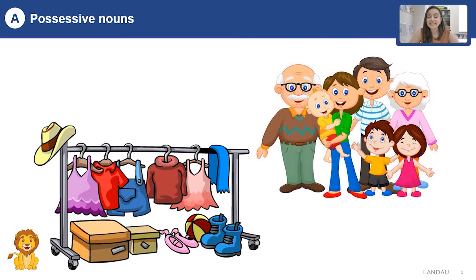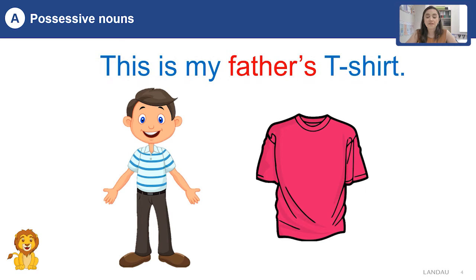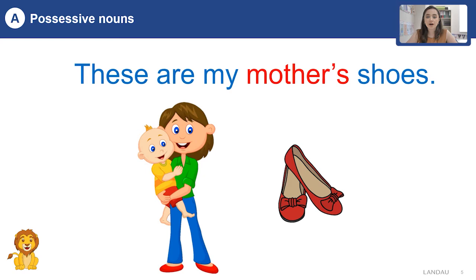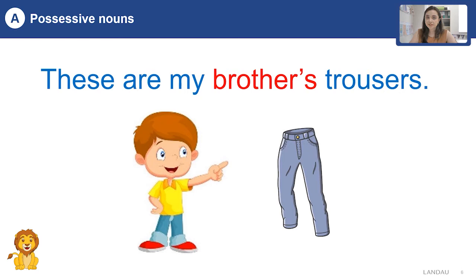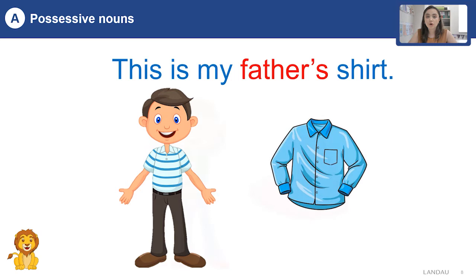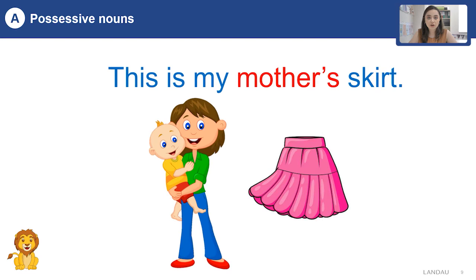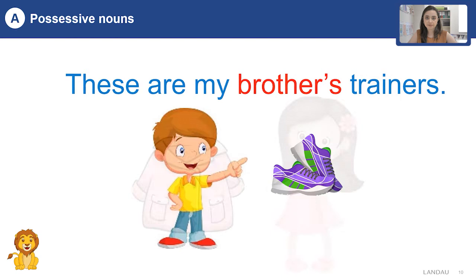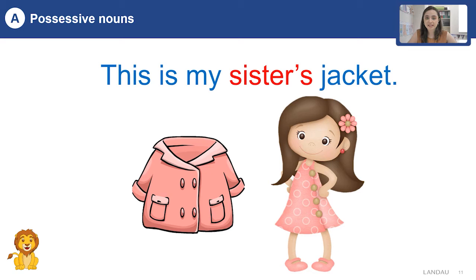This is our big family, and these are their clothes. Let's have a look. This is my father's t-shirt. These are my mother's shoes. These are my brother's trousers. And this is my sister's dress. This is my father's shirt. This is my mother's skirt. These are my brother's trainers. This is my sister's jacket.